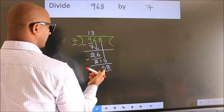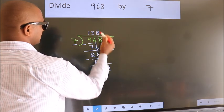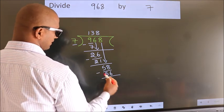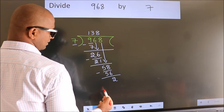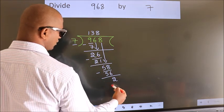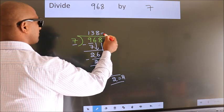A number close to 58 in the 7 table is 7 eights, which is 56. Now we subtract and get 2. No more numbers to bring down, so we stop here. This is our remainder. This is our quotient.